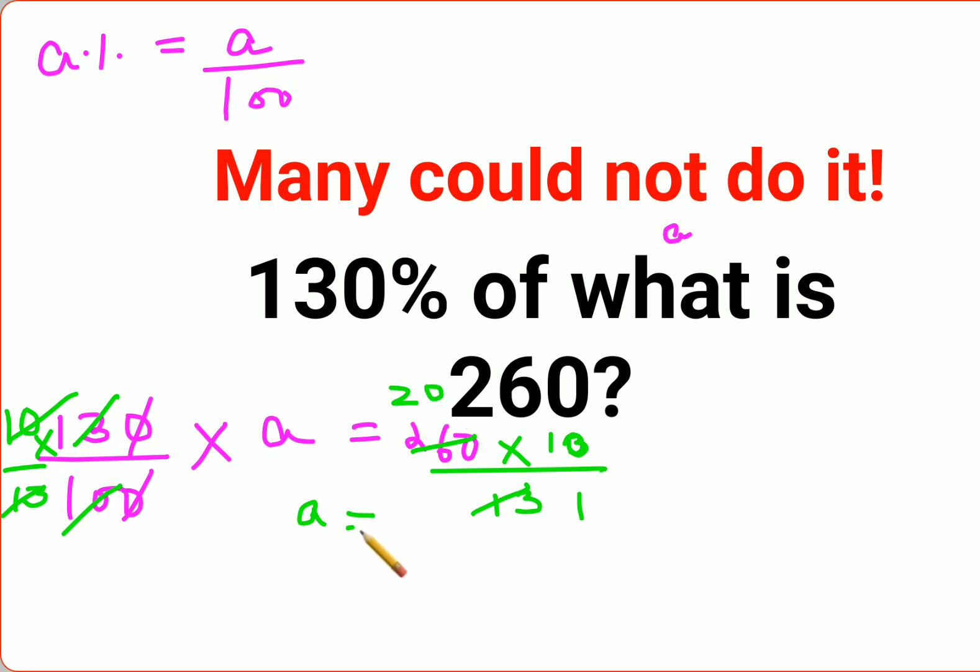So value of a comes out to be 20 into 10 which is 200. Okay, so now if you want to see, let's do it the other way round.